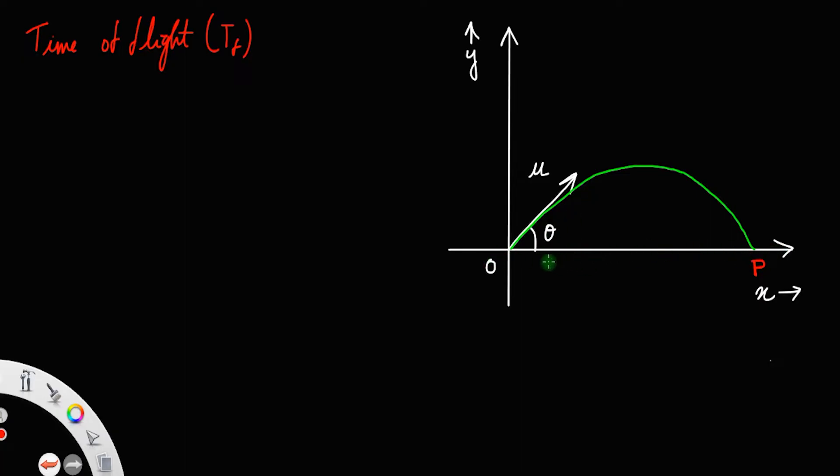That is the time taken by the projectile to move from point O to point P along this green path. That is the time of flight.